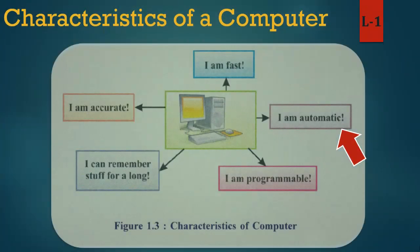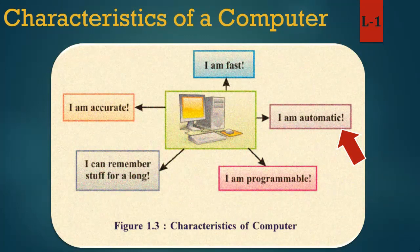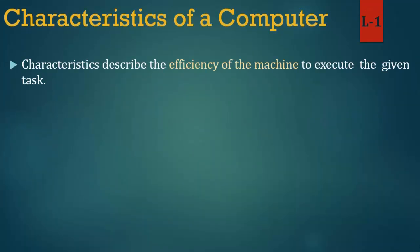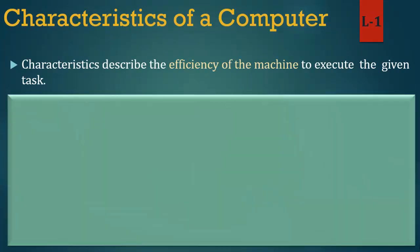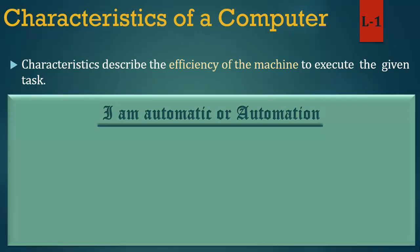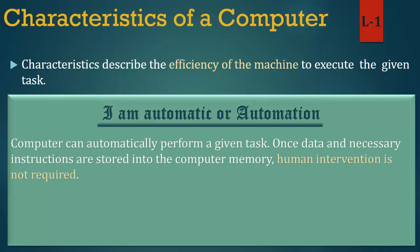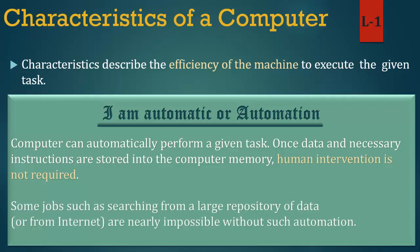Our new topic is characteristics of a computer. Characteristics describe the efficiency of the machine to execute a given task. The characteristics are: one, automatic; two, programmable; three, can remember stuff for a long time; four, accurate. Automation: a computer can automatically perform a given task once data and necessary instructions are stored into its memory. Human intervention is not required. Some jobs such as searching from a large repository of data or from the internet are nearly impossible without such automation.